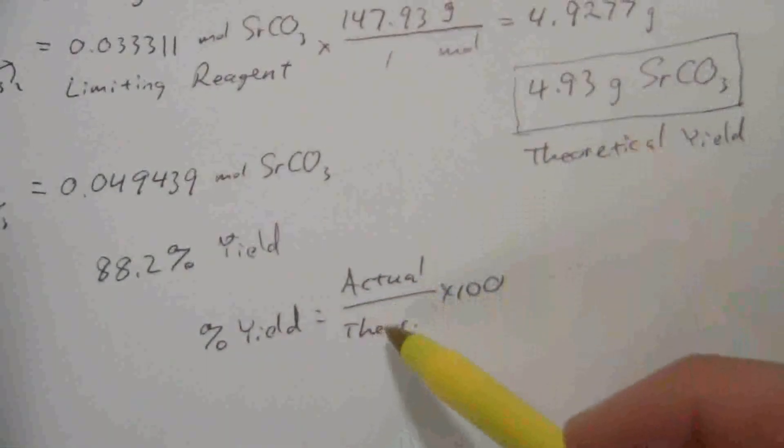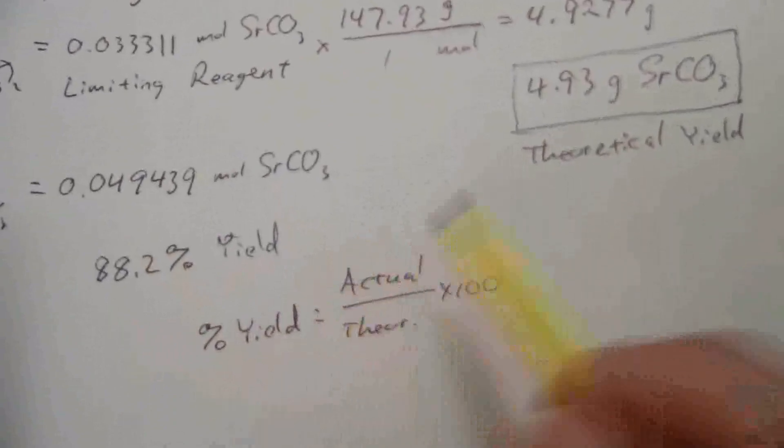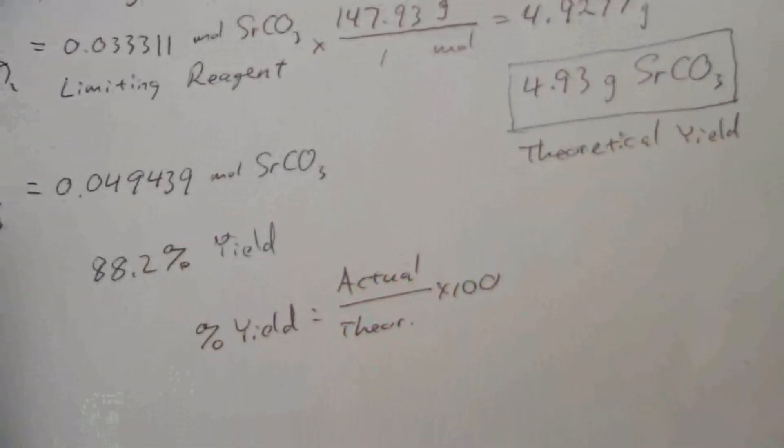I have the theoretical yields, I have the percent yield, so I can find out how much should I actually collect, what would be my actual yield.